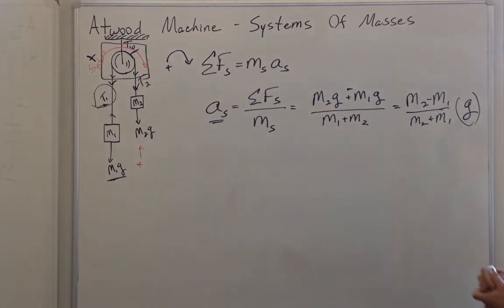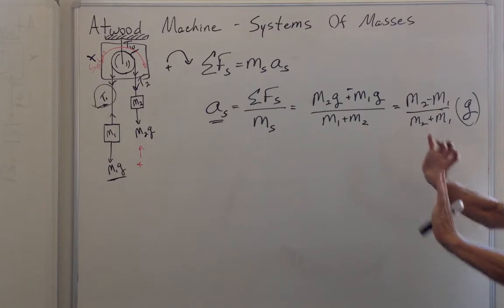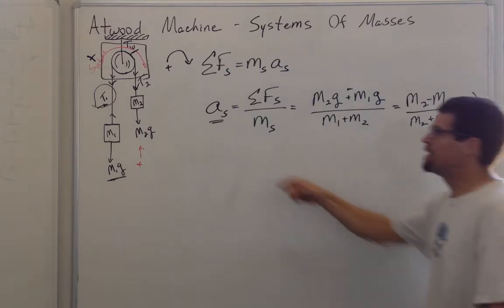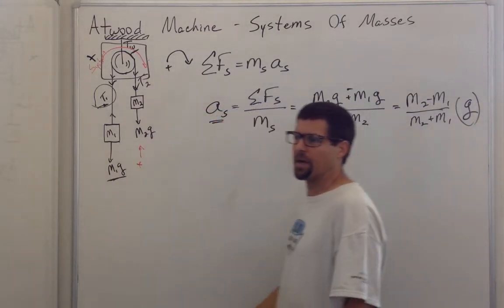And again, we can see if they're the same, acceleration is zero. If one of them gets super huge, then the other will drop out and the acceleration becomes gravity, either in the positive direction or the negative direction.